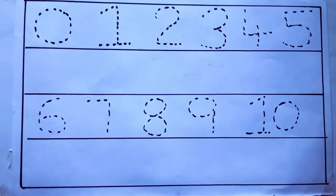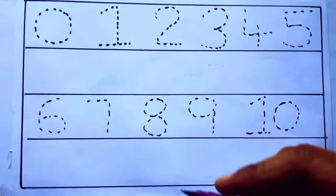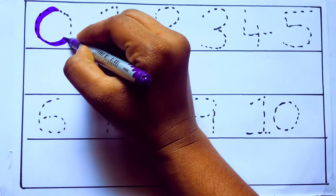Let's draw numbers. Violet color 0, Z-E-R-O.